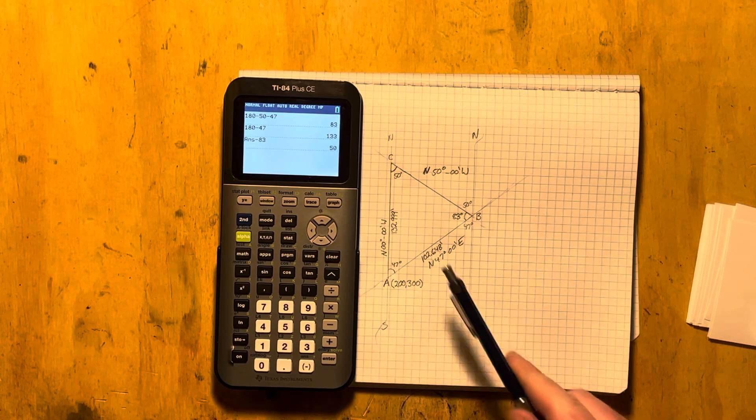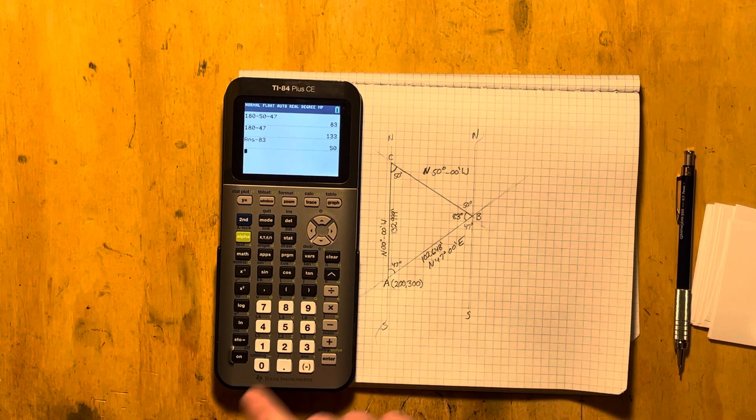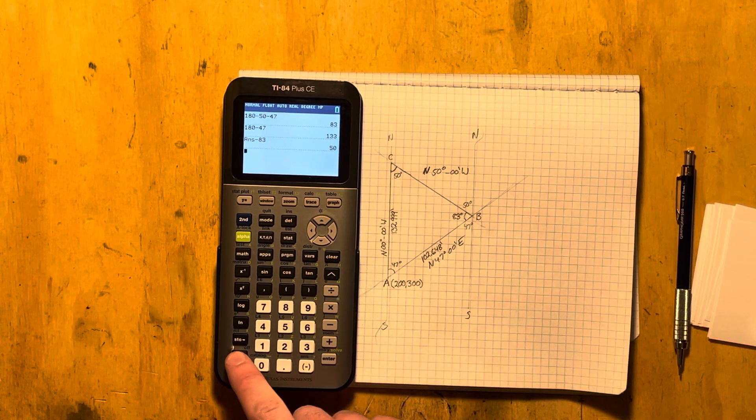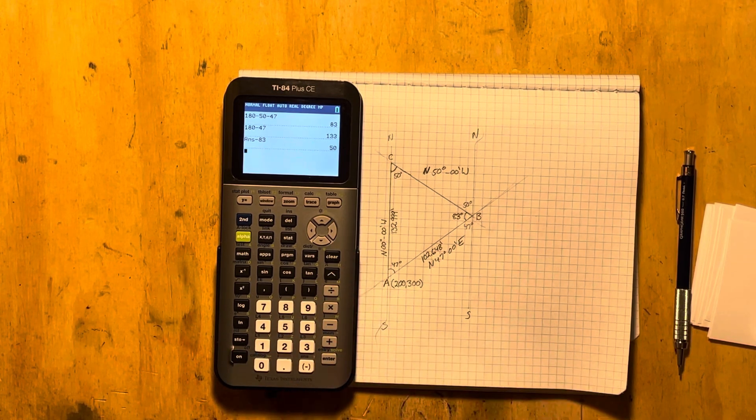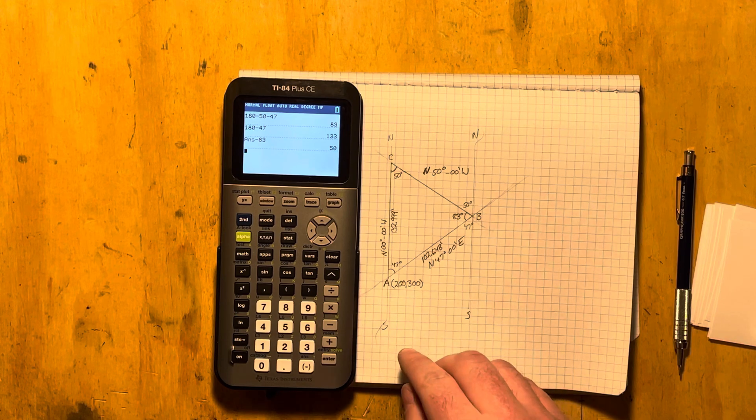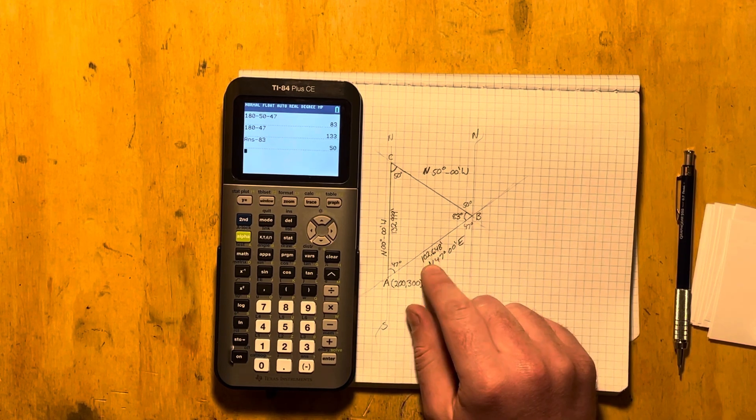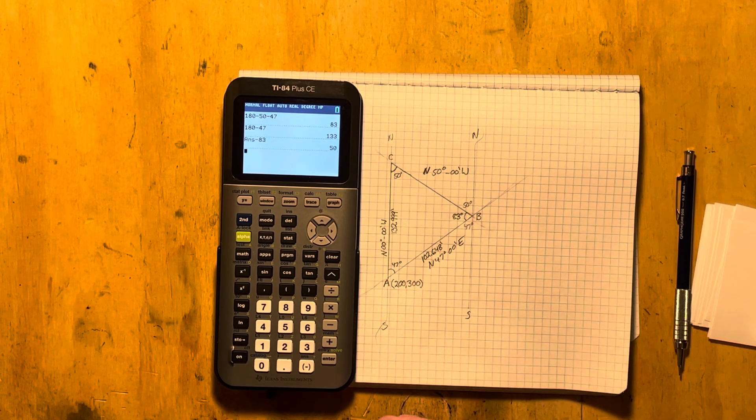And if we want to find the length of the line BC, we can do that very easily with law of sines. So we can take, I know there's multiple different ways we can do it. Let's go ahead and take, let's take our given information here and do that.